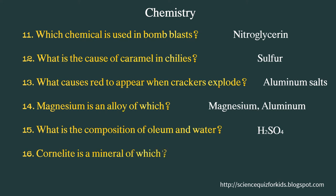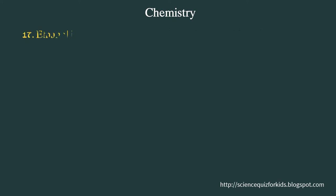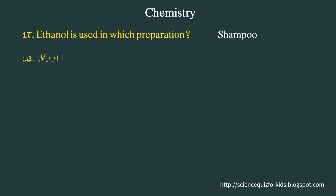Cornallite is a mineral of which element? Magnesium. Ethanol is used in which preparation? Shampoo. What is iodine used for? Antiseptic.